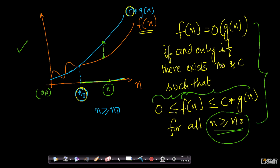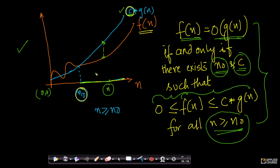If we can find these constants n0 and c — if there exist some constants n0 and c — then f of n is said to be order of g of n. If you plot your f of n and c·g(n) like this and can find constants c and n0 such that this whole statement is true, then we say that f of n is order of g of n. This is the rigorous mathematical definition.